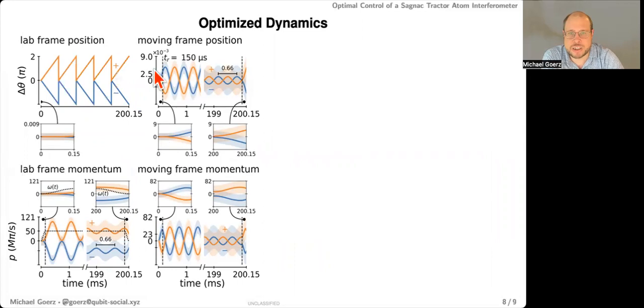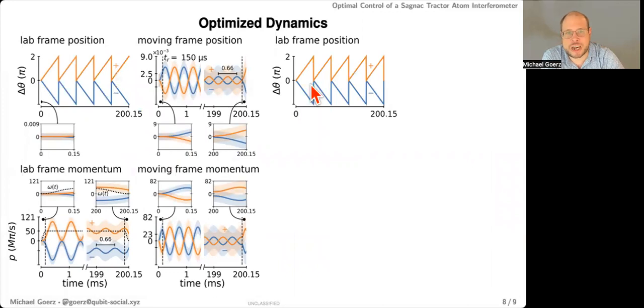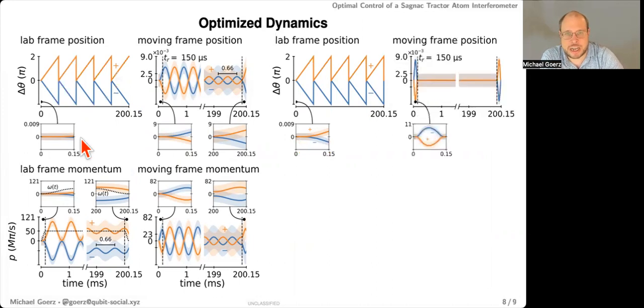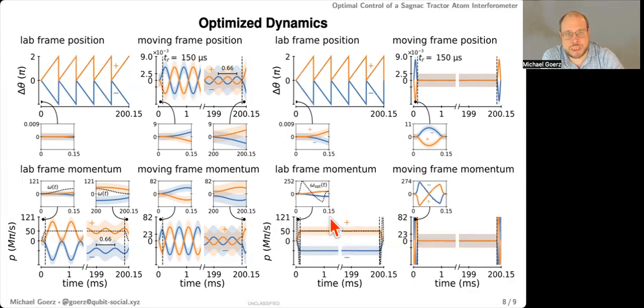So how did the dynamics look for that? So on the left, you have the dynamics for the guess again for comparison. And with the optimized field now, we see that the interferometer closes perfectly. So that's a good start. And if you look at the first 150 microseconds, we now see that the wave packet actually moves quite a bit compared to the guess. And if you look at the moving frame, you really see what's going on. So the wave packet still lags behind the potential a little, but then it actually catches up. So at the point here, the wave packet is exactly at the speed of the moving potential.